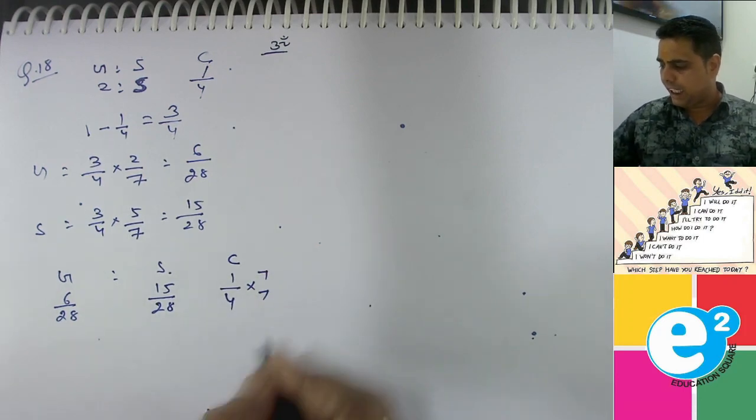Gold, silver and C. 6 upon 28. This is new. This is 15 upon 28. This is 1 upon 4. This is the new ratio. This is the new ratio we can see it.